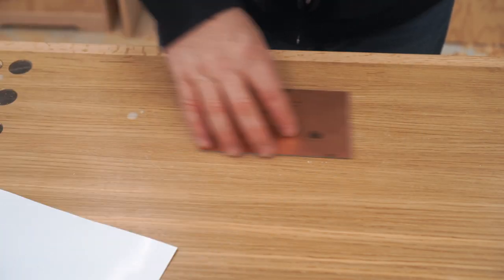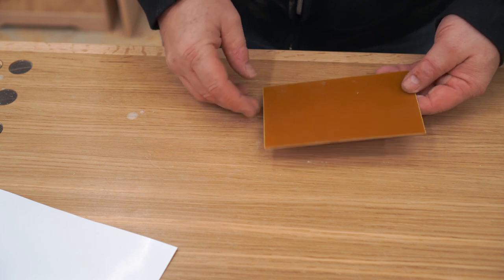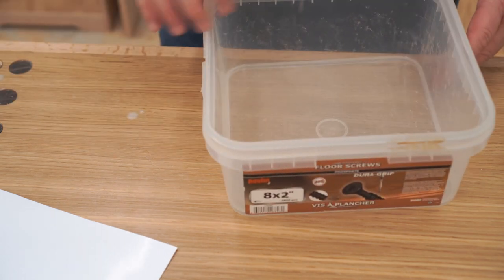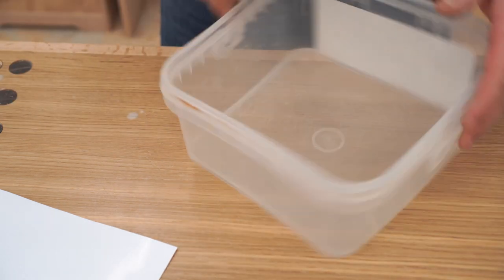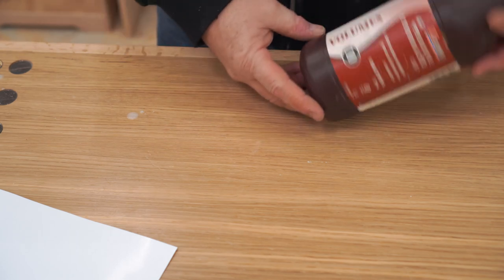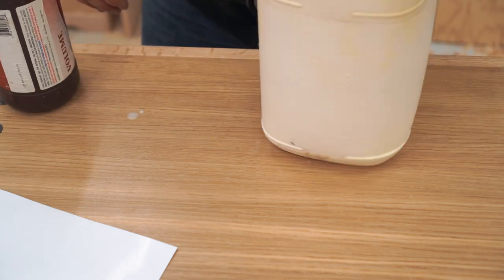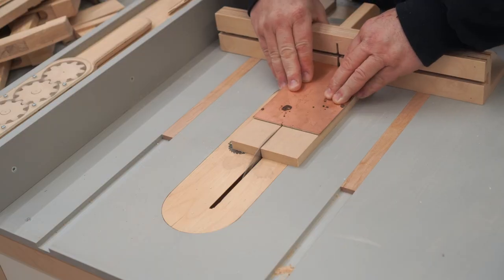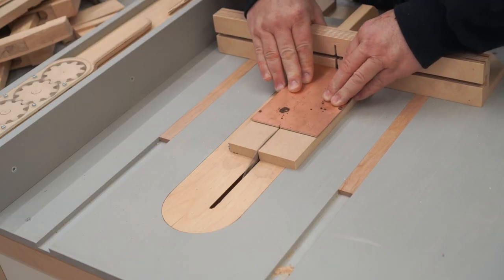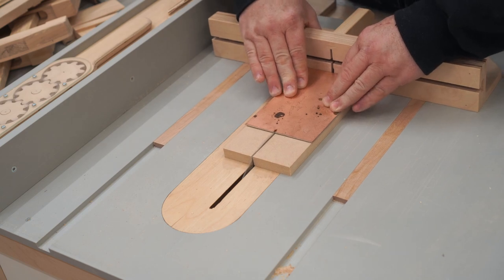You'll also need a copper clad board. The one that I have here is single-sided and pretty dirty, but that doesn't matter. And for the etchant, I'm using two commonly available chemicals. The first is peroxide, and you can get that at any drugstore. And then for the acid, I'm using muriatic acid, and you can get that at most building supply places.